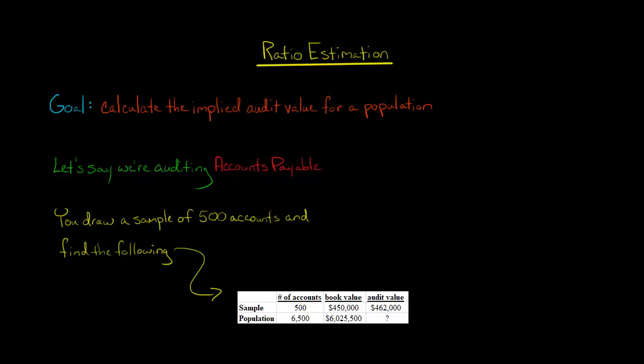In this video, I'm going to show you how to calculate the implied audit value for a population by using ratio estimation.